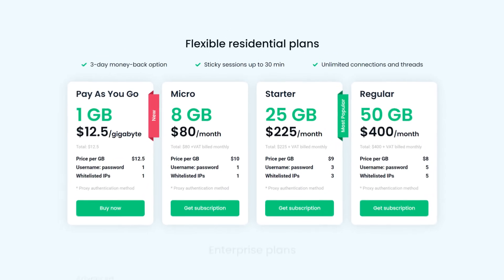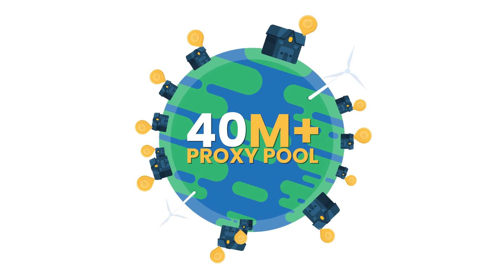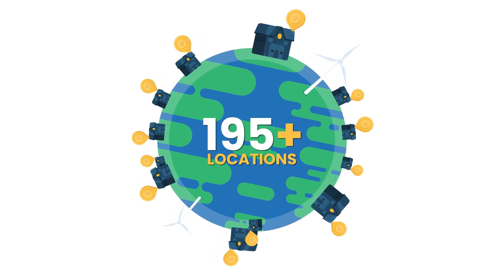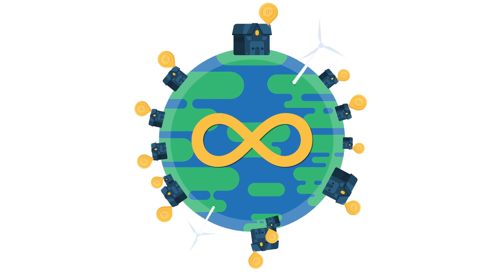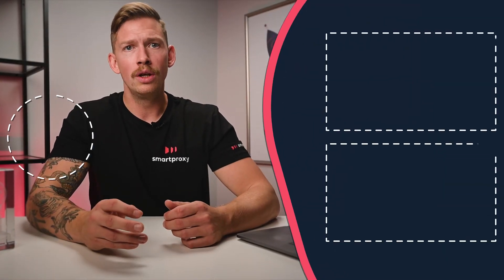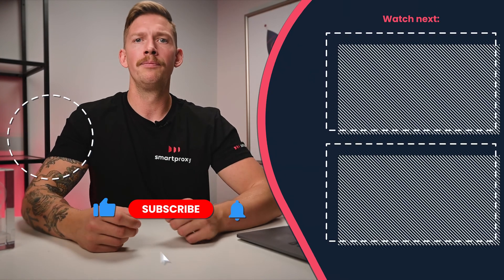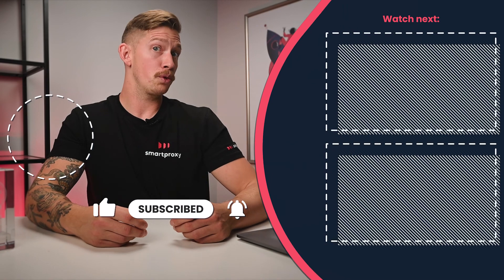At Smart Proxy, we have a wide range of residential proxy plans to suit your needs — even a pay-as-you-go option if you're not a fan of monthly subscriptions. They all come with access to a proxy pool of over 40 million residential proxies from more than 195 locations worldwide, an unlimited number of connections and threads, and even city-level targeting. So whether it's for personal or business use, we've got whatever you need. Hit the link below to check out our residential proxies.